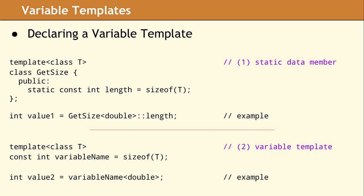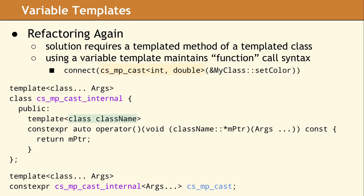Now let's look at our new design, which uses a variable template to provide a clean API. In our original design, we had a templated method with two template parameters, the variadic template parameter args and the class name.